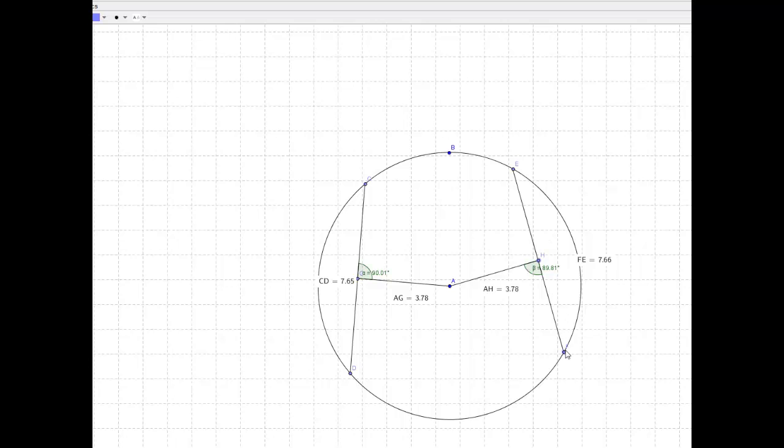Because if the chords are different sizes, well, you see what starts to happen. Like it doesn't work out. It doesn't match up. It doesn't give the same distance from the center. So that's what we're looking at when we're looking at that theorem.